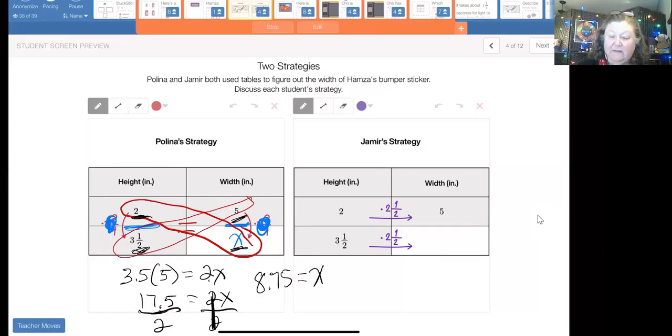If 8.75 equals x, then it goes right here as my missing amount. And it's the same thing you get when you multiply this, and it's the same thing you get when you multiply this. So they're showing that there's lots of different ways to find those missing amounts. Cross multiplication is a way that we discussed in class today, and it can work as well.